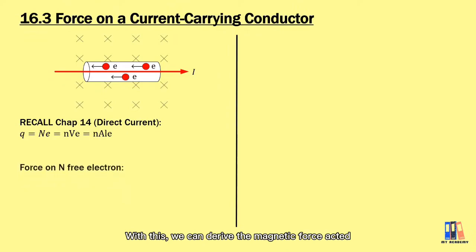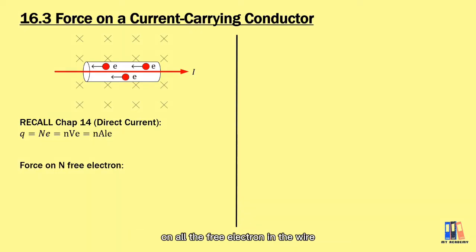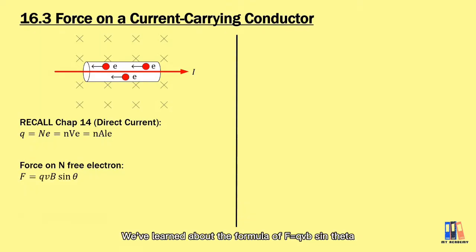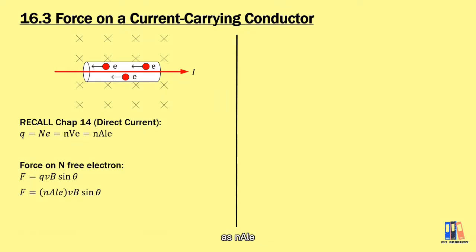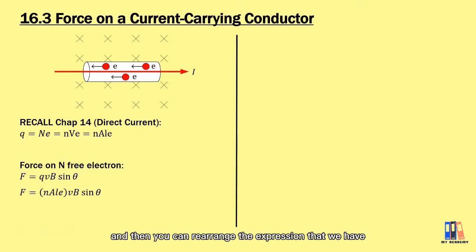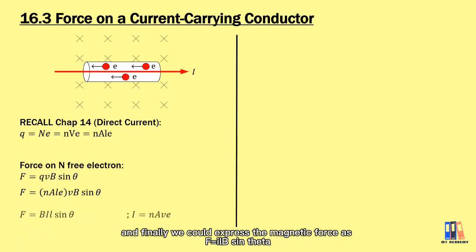With this, we can derive the magnetic force acting on all the free electrons in the wire. We have learned the formula F = QVB sinθ. We can substitute the expression of the charge as N·A·L·e and rearrange the expression to get I = nAev. Finally, we can express the magnetic force as F = I·L·B sinθ.